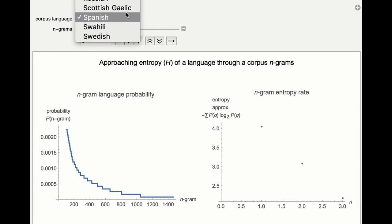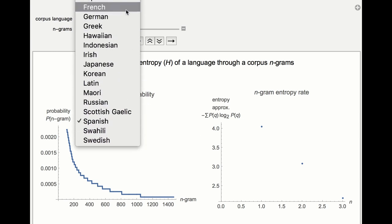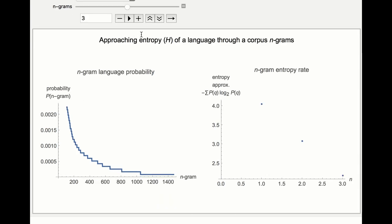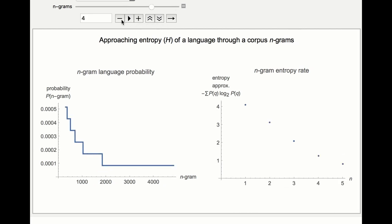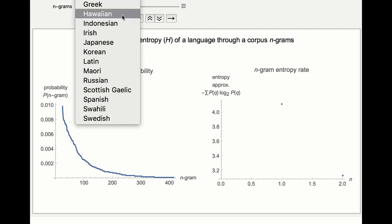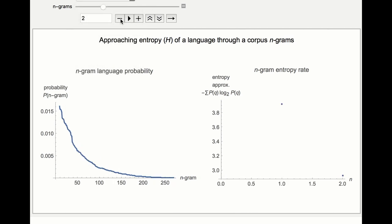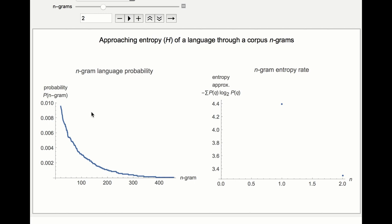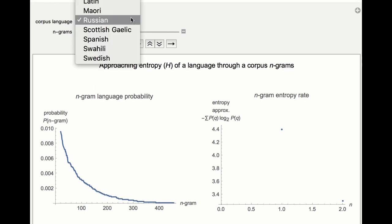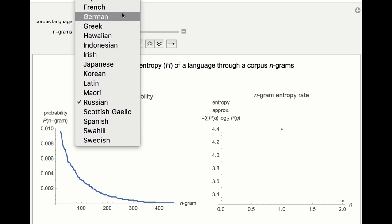This plot shows the frequency of sequences of N letters calculated from the text of the Universal Declaration of Human Rights in 20 languages, and illustrates the entropy rate calculated from taking different word block sizes. Entropy rate shows the entropy change as a function of number of letters. The entropy of a language can be seen as an estimation of the probabilistic information content of each letter in that language.